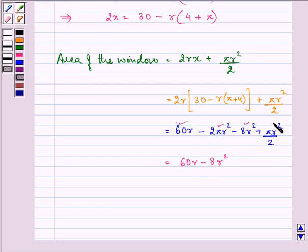In combining these two, we have, minus 3 pi r square upon 2. So, this is the required area of the window.